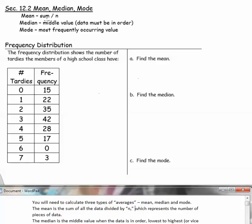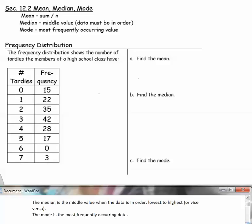The mean is the sum of all the data divided by n, which represents the number of pieces of data. The median is the middle value when the data is in order from lowest to highest, or vice versa. The mode is the most frequently occurring data.